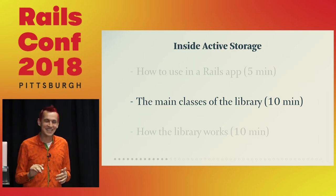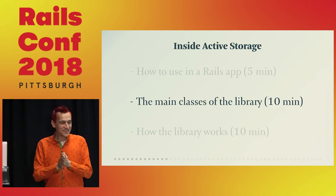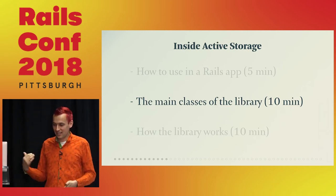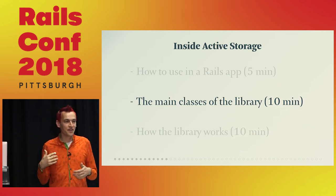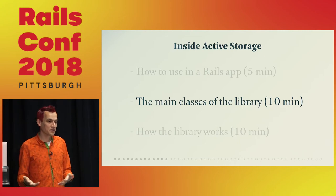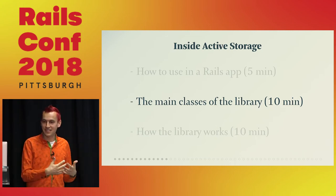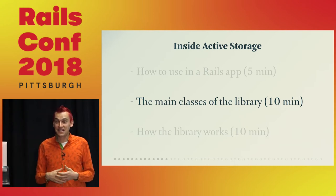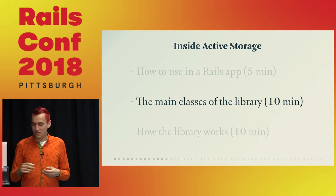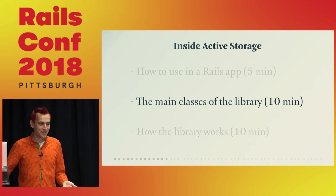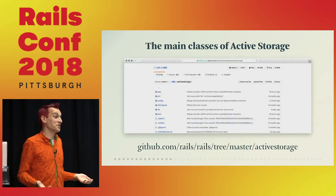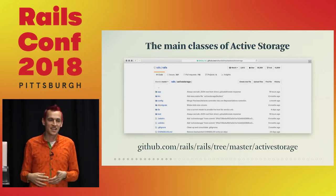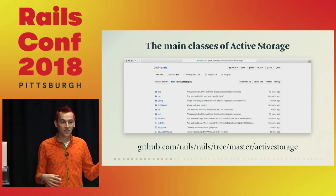So far so good — that was the easy part. Now how does it work? What's inside the code? We were talking about this in the previous talk — you use the routes but then you want to see how they work, so you open the code base. Here we're going to go through a similar journey and look at the classes inside Active Storage. Rails is open source, so the entire source code is on GitHub at github.com/rails/rails — there is an active_storage folder and the entire code is right there.